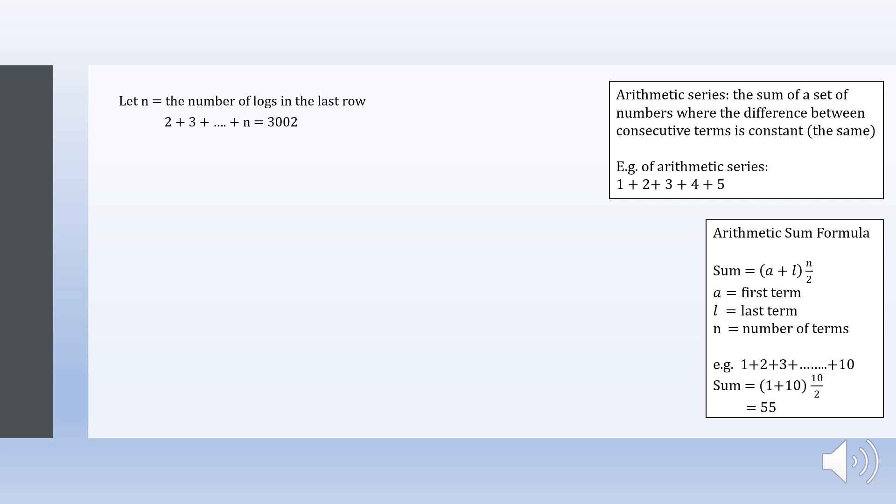Since the stack of logs starts with 2 logs, then 3 logs, and so on, we have to add 1 to both sides to make an arithmetic series. So therefore, 1 + 2 + 3 + all the way to + n equals to 3003.